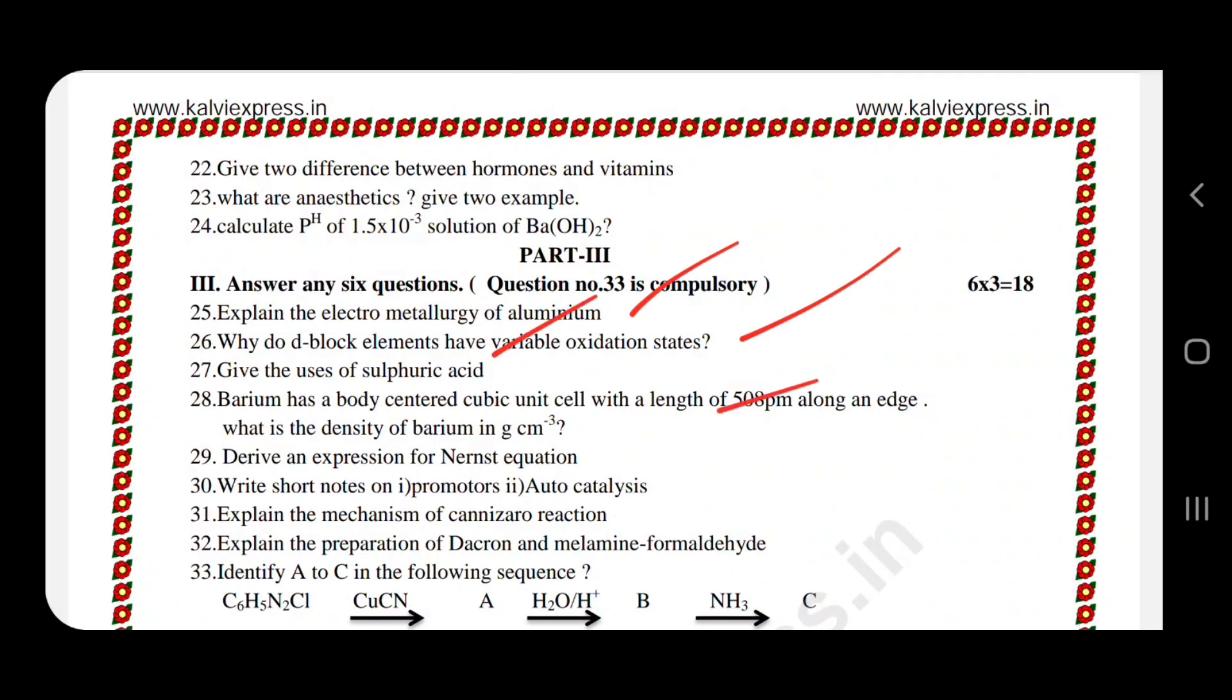For some examples, density can be used, units of density can be used. Derived non-stick coating in three markers. Promoter, auto catalyst, mechanism is very useful. Cannizzaro is 3 markers.